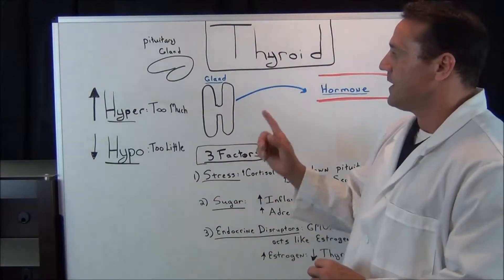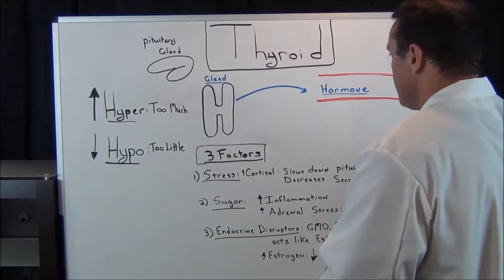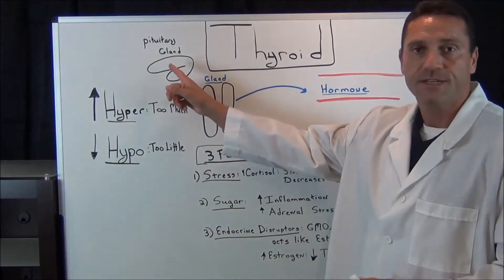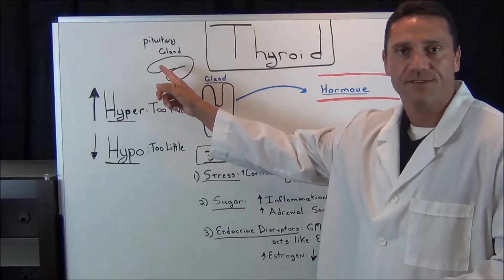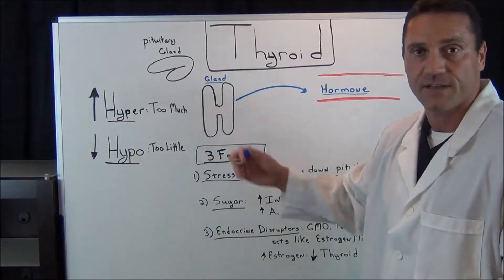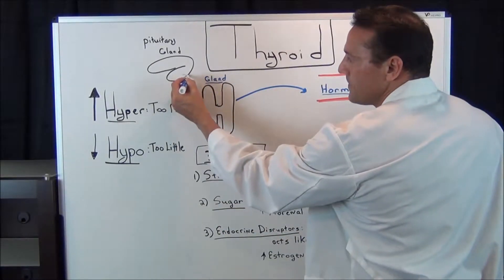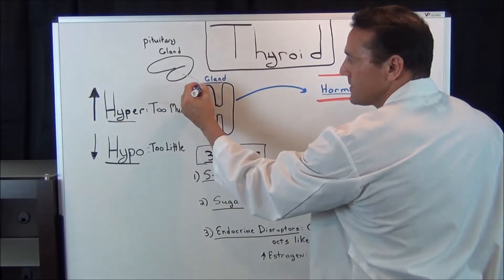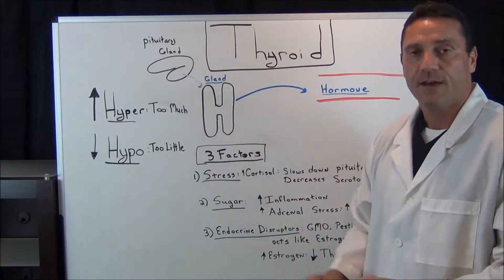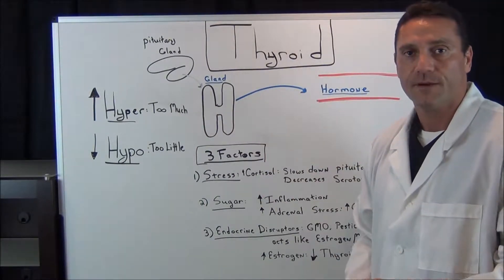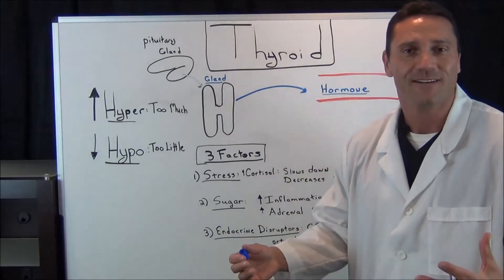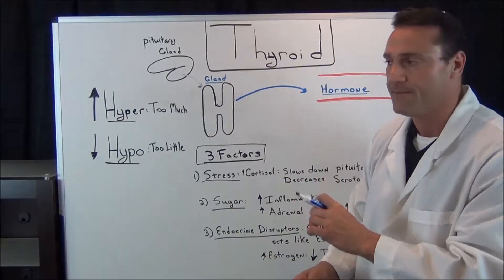How the body works: the pituitary gland — the master gland — sends a signal to, in this particular instance, the thyroid gland. It sends a signal to the thyroid gland to release thyroid hormone. A hormone is — I always say it's a communicator. It's released in the bloodstream.